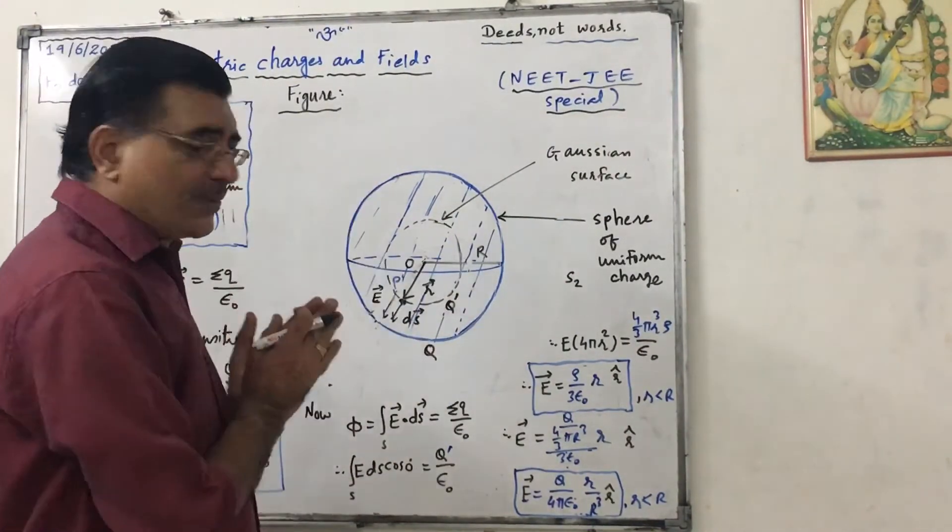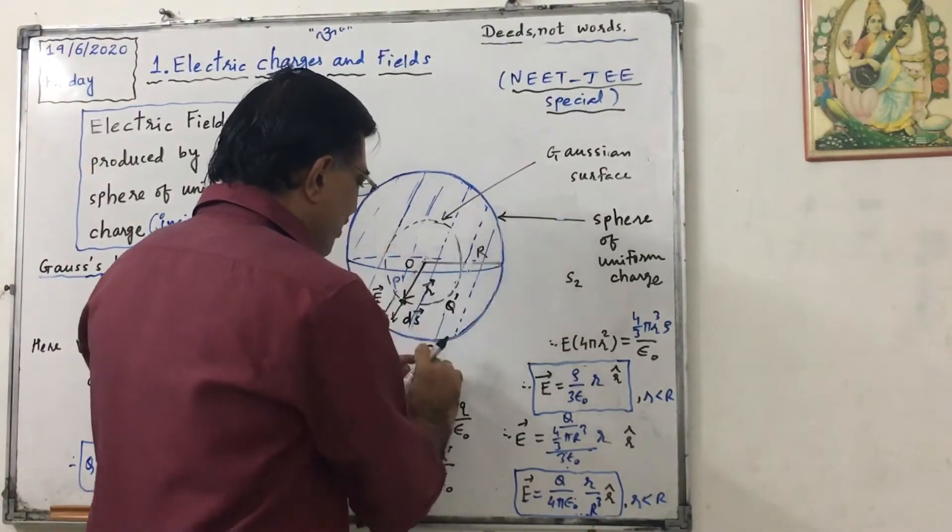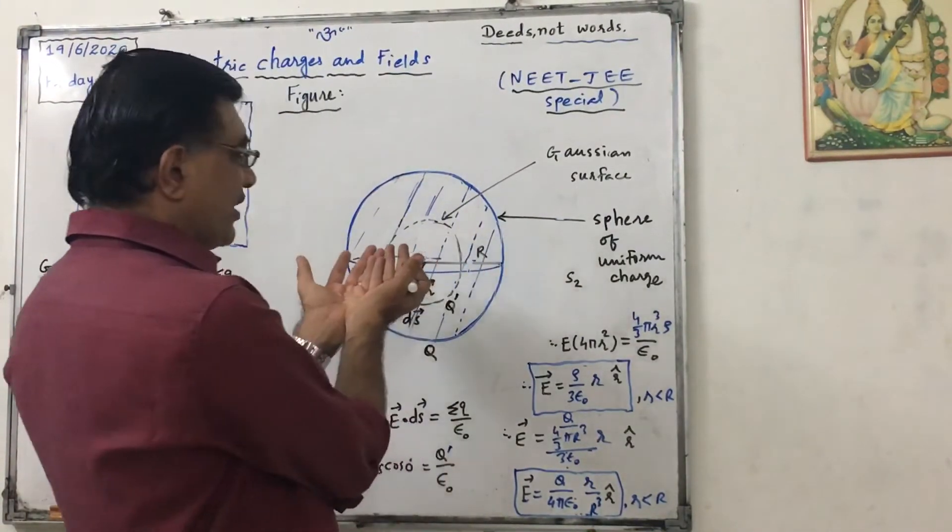So this is the figure. This is the sphere of radius capital R, having charge capital Q, uniform charge distribution.